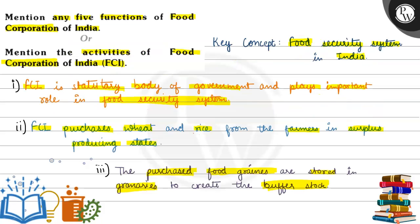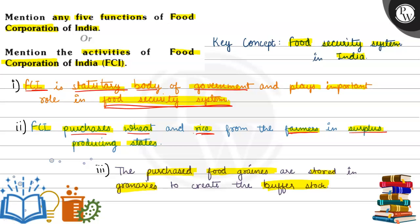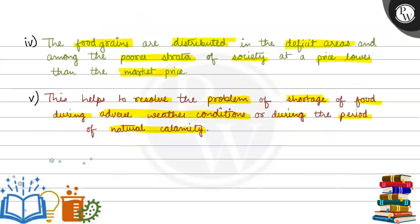तो FCI क्या है? यह एक statutory body है government की और यह food security system में एक essential role play करती है. यह wheat और rice farmers से surplus producing states से purchase करती है, उस purchased food grain को granaries में store करके buffer stock बनाती है. Food grains deficit areas में market price से कम price पर distribute किये जाते हैं, और यह stored food adverse weather conditions और natural calamities के time पर भी food insecurity की problem को resolve करता है.